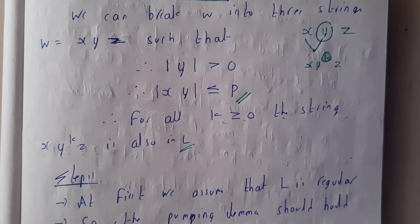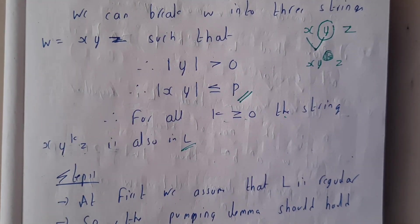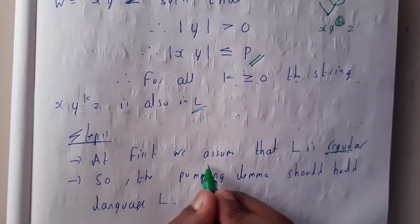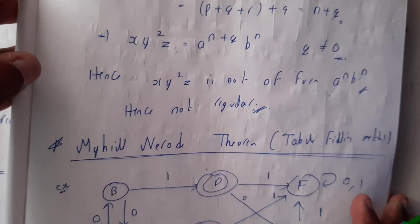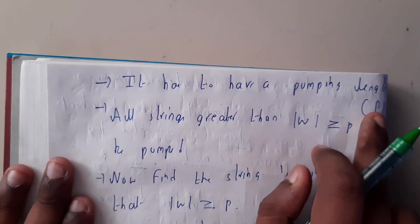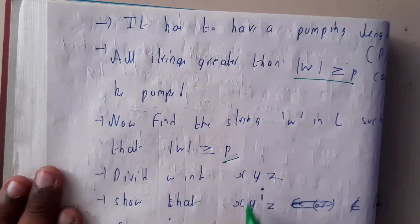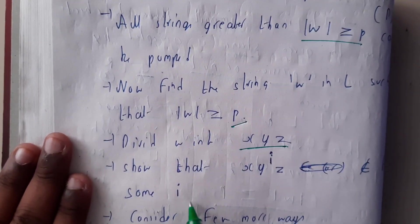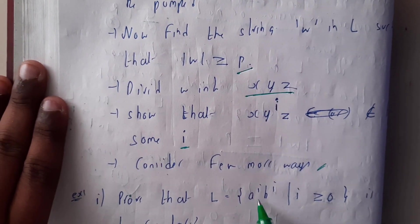The basic steps for solving this problem are: initially, the first step is assuming that our language is regular — it is just an assumption. So Pumping Lemma should hold for the language L, meaning it has a pumping length p where |w| is greater than or equal to p. Then we find the string and divide it into three parts x, y, z.